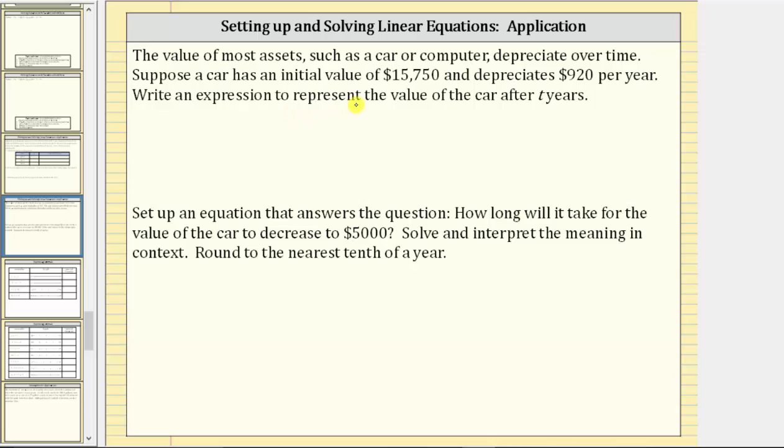Write an expression to represent the value of the car after t years. Because t is the number of years, the value of the car after t years is equal to $15,750 minus $920 times t, which means the expression to represent the value of the car is $15,750 minus $920t. Remember, $920t means $920 times t.